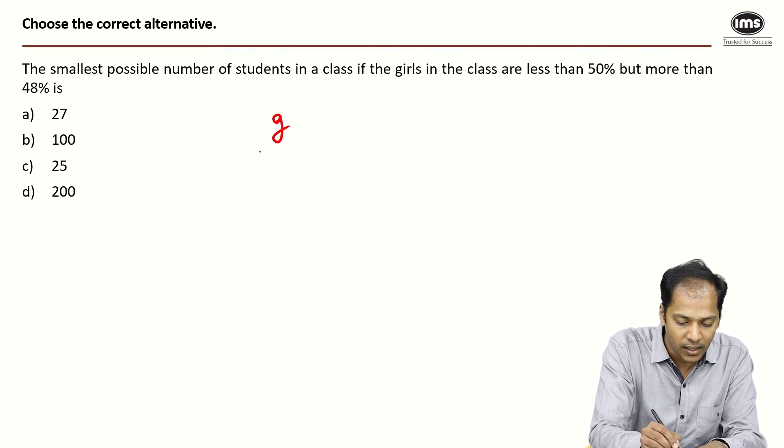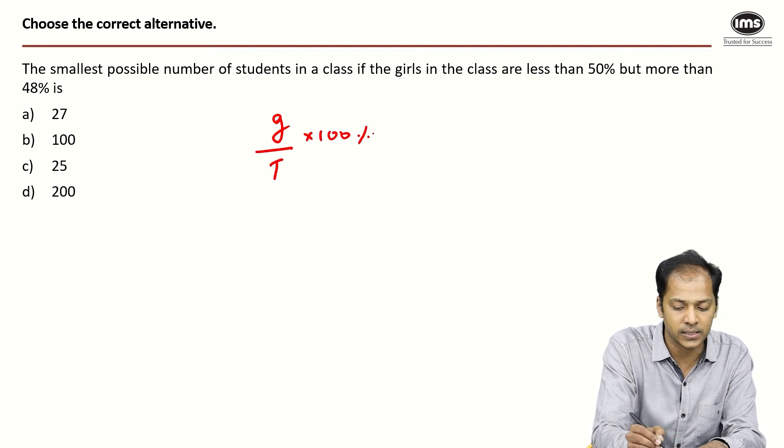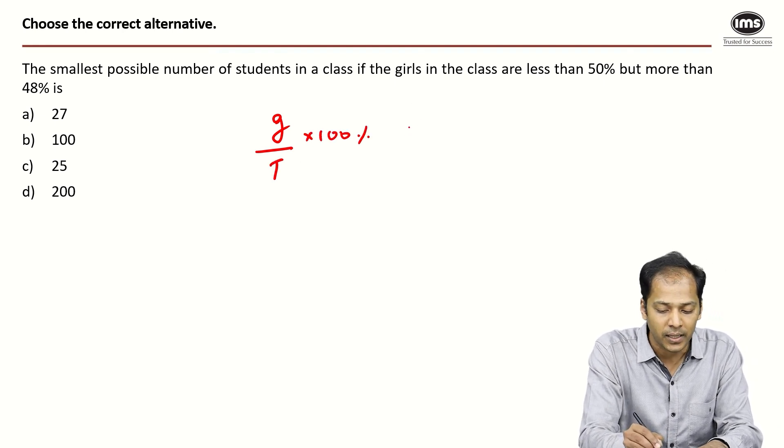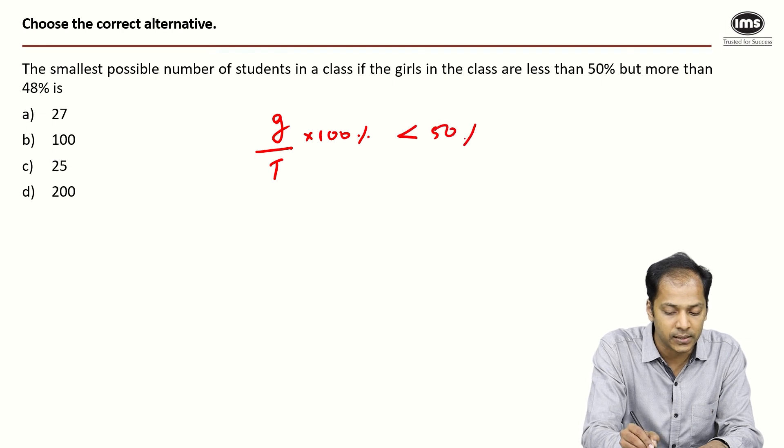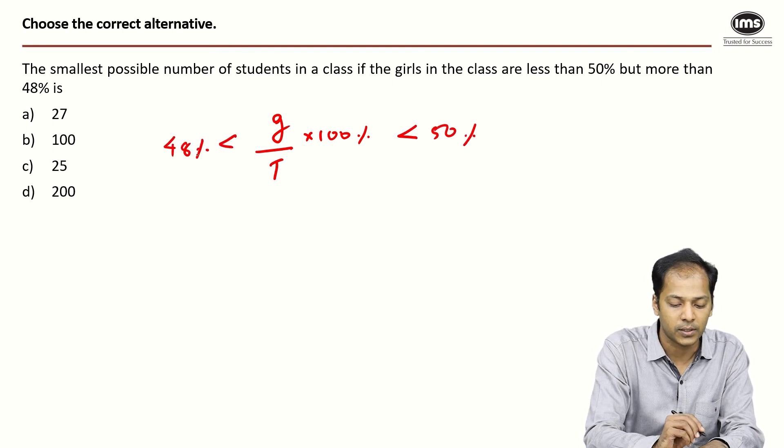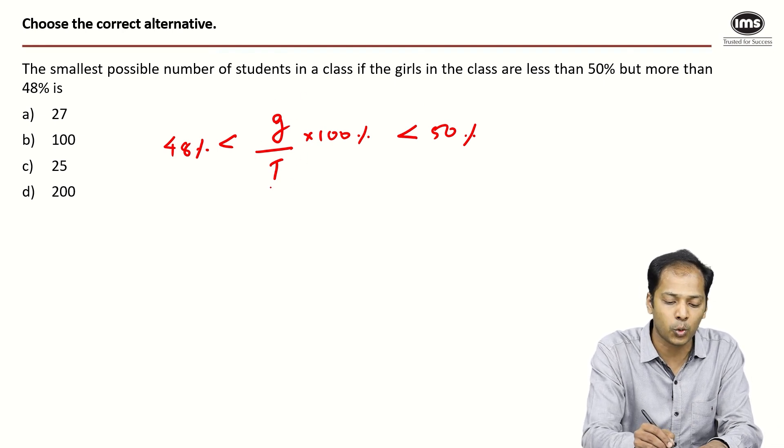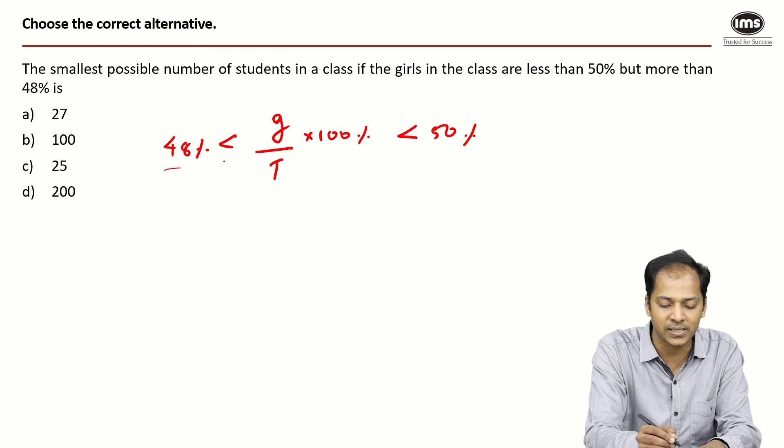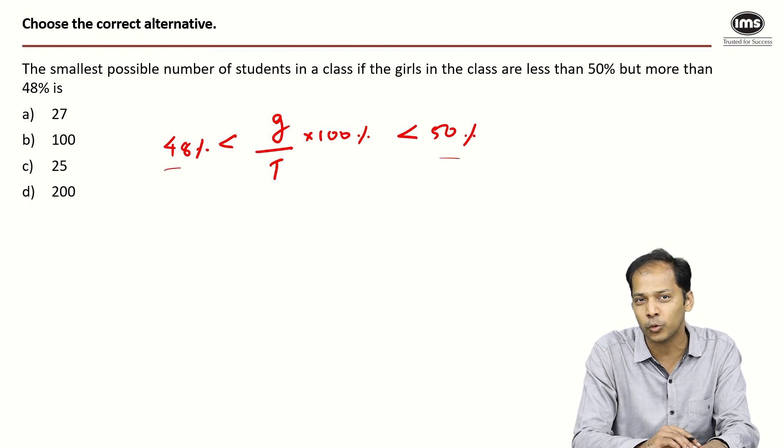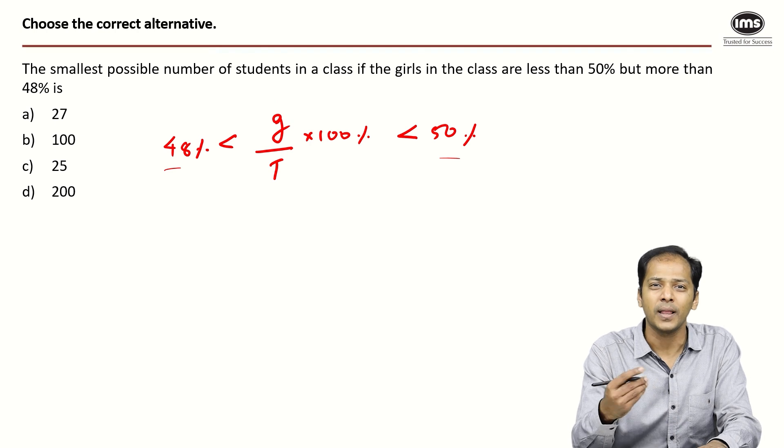The key here was that number of girls can only be an integer. So the number of girls upon the total times 100% is going to be less than 50% and greater than 48%. The total has to be something that can give us a percentage between 48% to 50%.